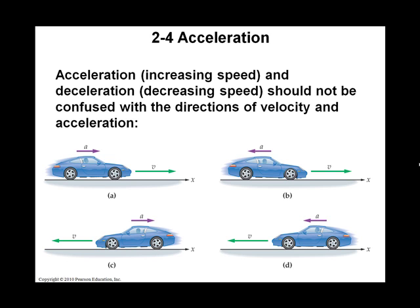For acceleration, the direction of acceleration is the direction in which it's getting faster. So if you have a positive acceleration, like in figure A, then you're getting faster in the positive direction. If the car is moving backwards in the opposite direction and acceleration is forward, that means you're actually slowing down. Just because you have a positive acceleration does not mean you're always increasing speed, and a negative acceleration doesn't always mean that you're slowing down.